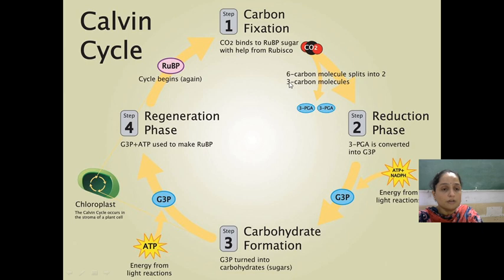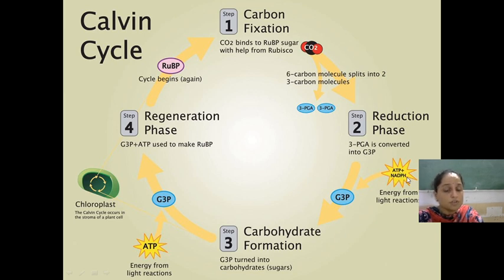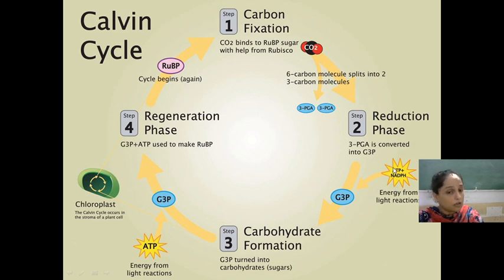In the reduction phase, whatever was produced during carbon fixation — that is, 3-phosphoglycerate — is going to be converted into glyceraldehyde-3-phosphate, in the presence of ATP and NADPH which we got from the light reaction. That is the reason it is dependent on the light reaction. If you are not going to get this energy from the light reaction, then this dark reaction is not going to proceed.